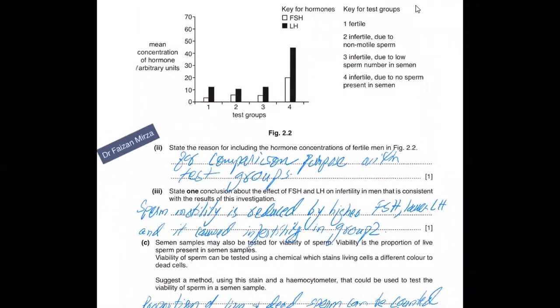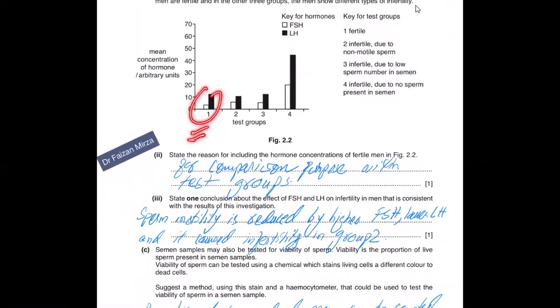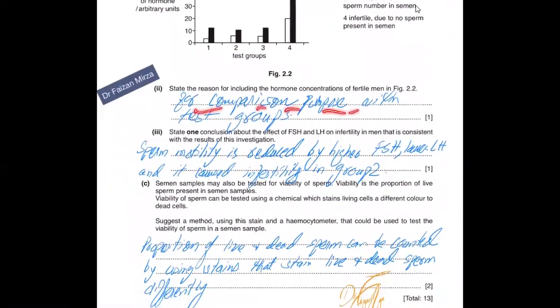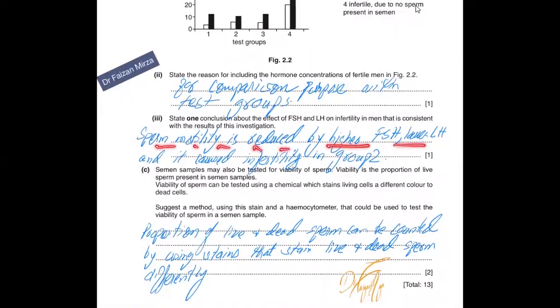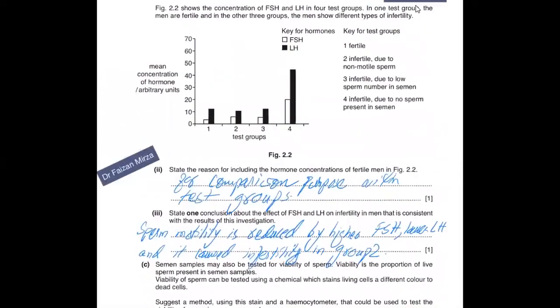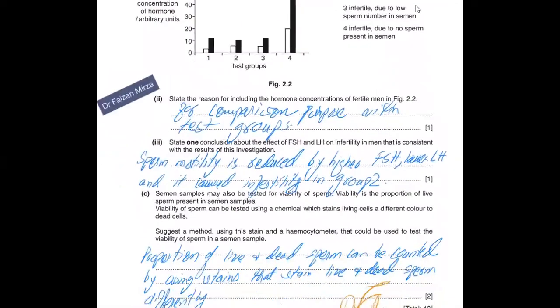State the reason for including the hormone concentration of fertile men. Why was group one added? Because group one behaves as a control. All men are fertile, so we know the baseline of standard individual men who are fertile and their hormonal profile of FSH and LH. When compared to others who are infertile for various causes, their LH and FSH ratio is different from group one. This can be used as a standard for comparison with other groups. State one conclusion: Sperm motility is reduced by higher FSH and lower LH, causing infertility in group two.